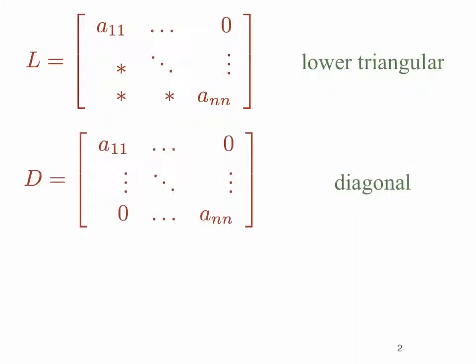A diagonal matrix is a matrix that has entries just along the diagonal — entries of the form A_ii, so for example A_11, A_22, and so on. There are zeros in all other entries. The only non-zero entries in a diagonal matrix are found along the diagonal.